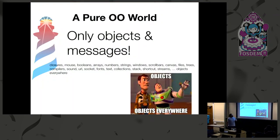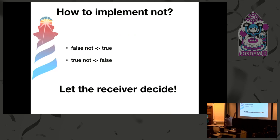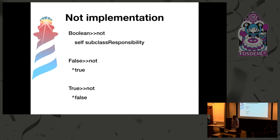We only have objects and messages — it's a real, pure object-oriented world, and everything in the system is based on objects. We use polymorphism a lot to implement things. For example, if we want to implement NOT, we have a false NOT that should return true, and a true NOT that should return false. We let the receiver decide — we use polymorphism. So we have three classes: one for all Booleans with common behavior, one for false, and one for true. Because every object — even true and false — are instances of a class, the behavior of true and false are in their respective classes.